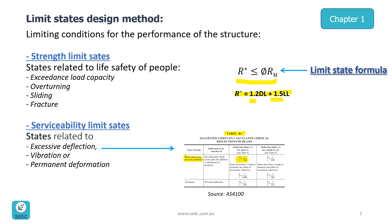And on the other side of this formula, you can see phi which is the reduction factor for Ru, which is capacity of the structure for different actions such as axial, bending moment, shear, etc.